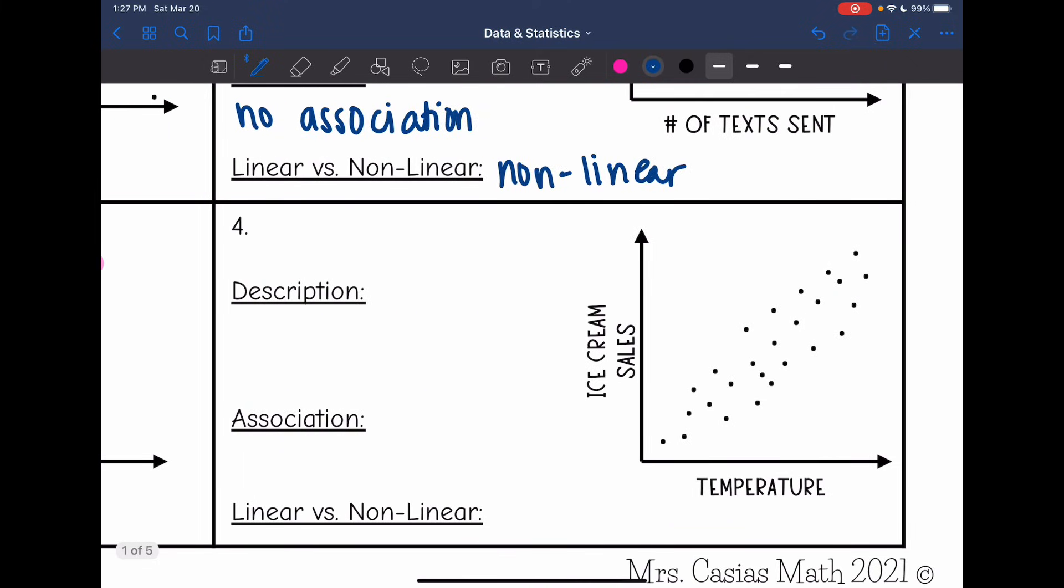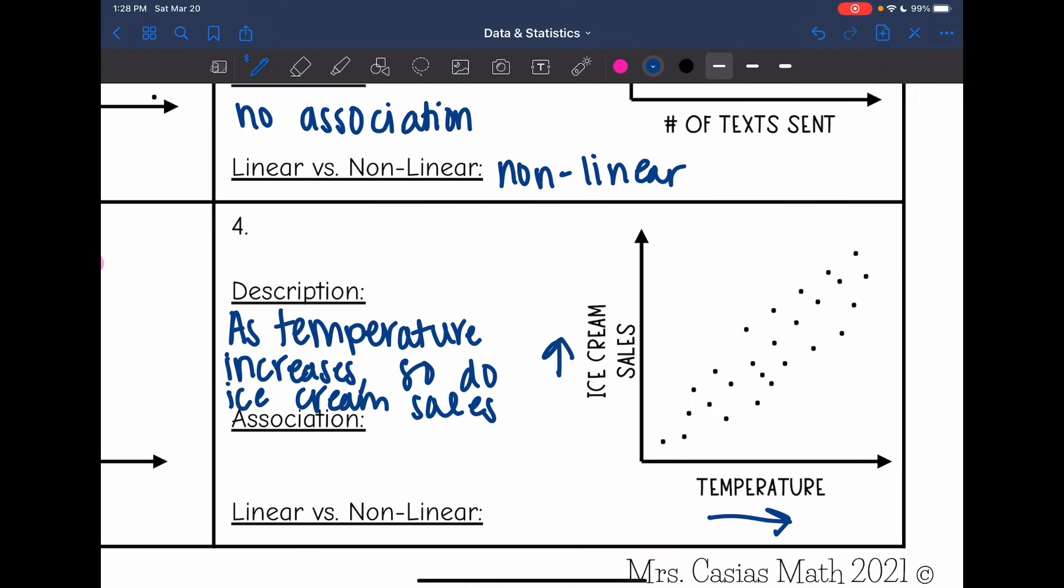And then last one, as my temperature increases, so do ice cream sales. So that would be a positive association because we are going up. And this one, it's not as strong as some of my other ones, but this is in general in the shape of a line. So this would be a linear association.